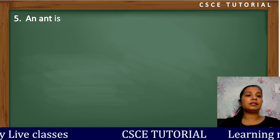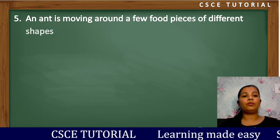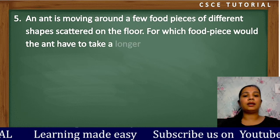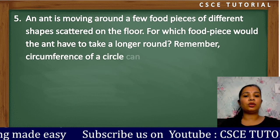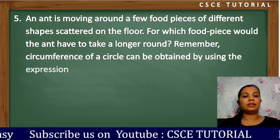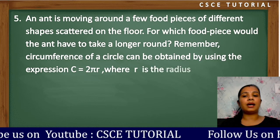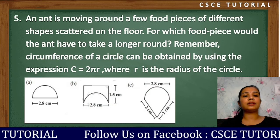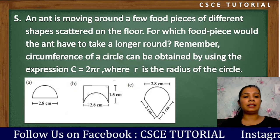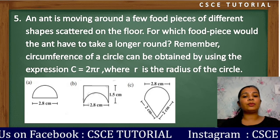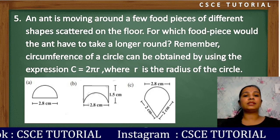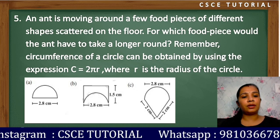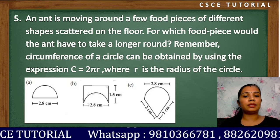The fifth question: an ant is moving around a few food pieces of different shapes scattered on the floor. For which food piece would the ant have to take a longer round? Remember, the circumference of a circle is c = 2πr, where r is the radius. There are three different figures A, B, and C, and we need to find which has the longest perimeter.